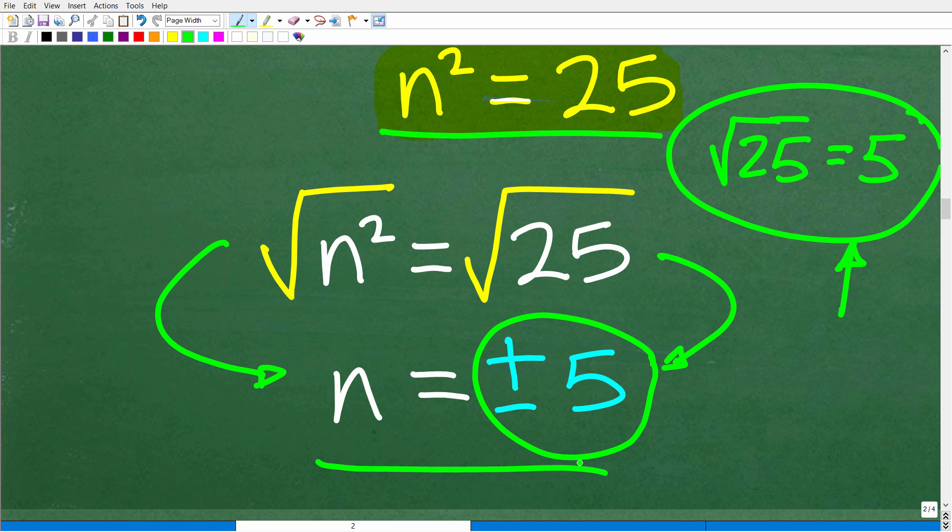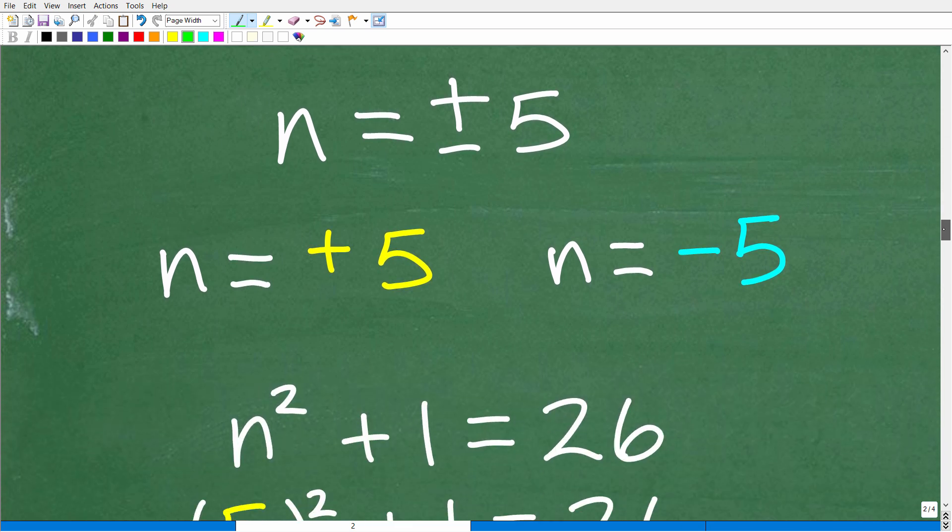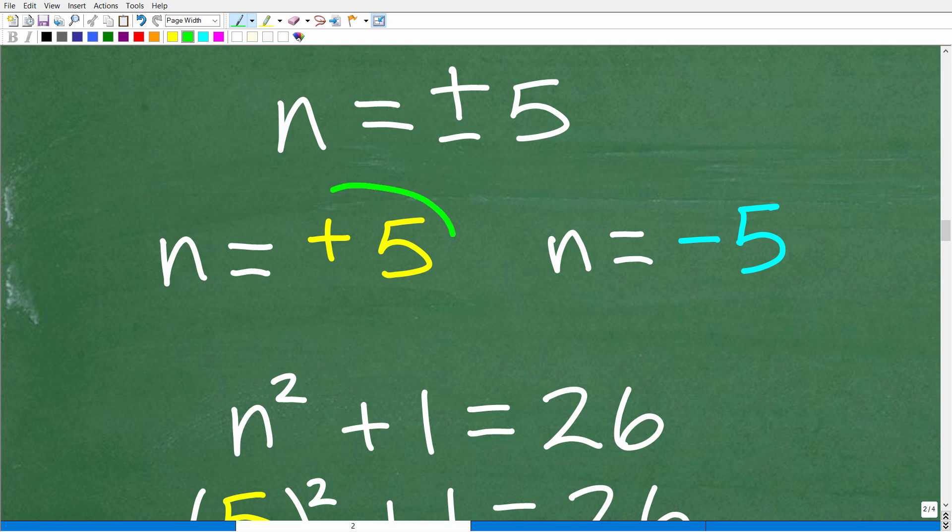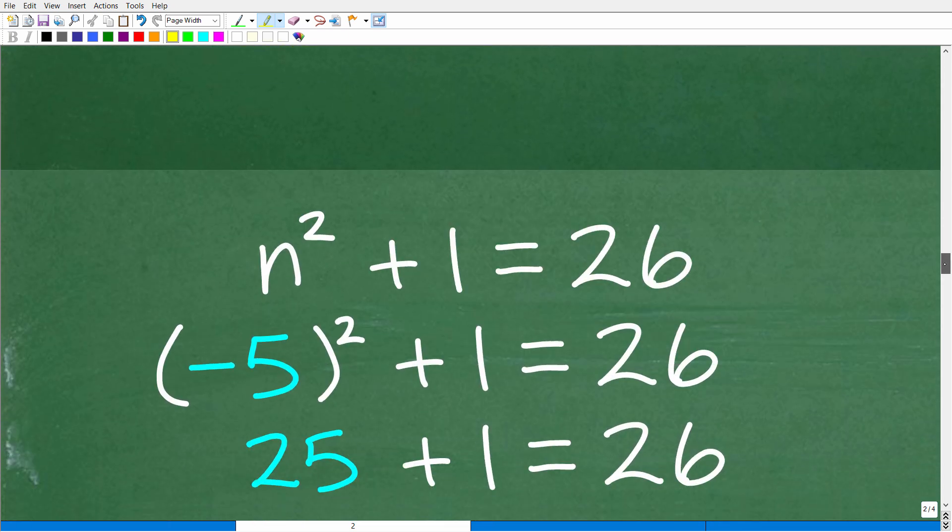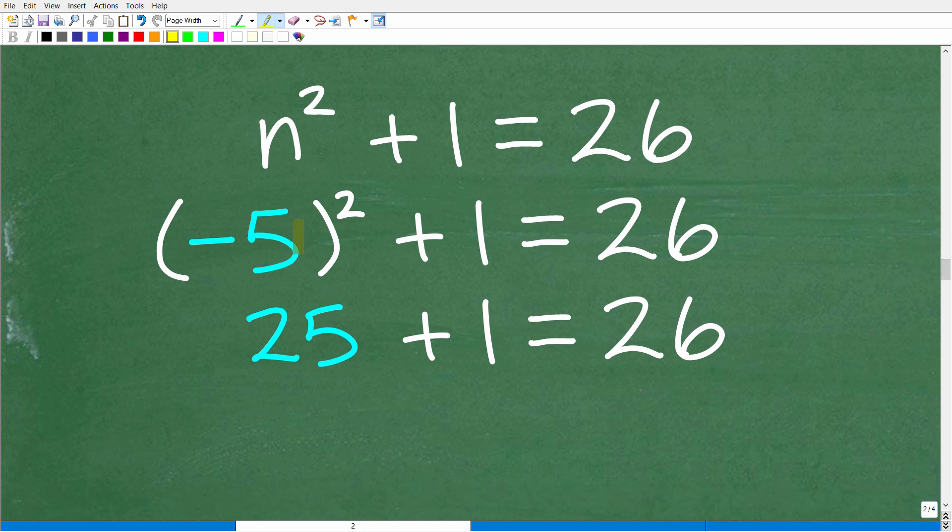Our number or numbers is both 5 and negative 5, and we can check this in the original equation. N is equal to both positive and negative 5, meaning that one answer is a positive 5, and the other answer is a negative 5. A number squared plus 1 is 26. If that number is 5, that's 5 squared, or 25 plus 1, which is 26. If that number is negative 5, we have negative 5 squared, which is a positive 25. Positive 25 plus 1 is also 26.